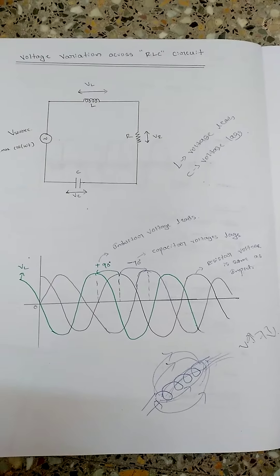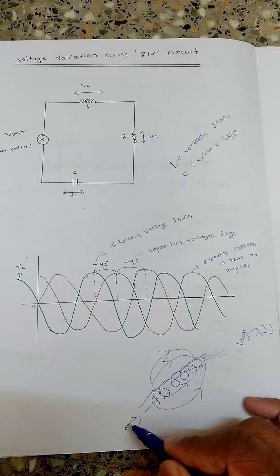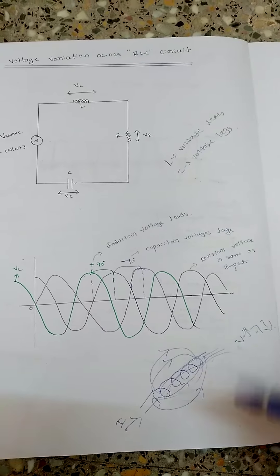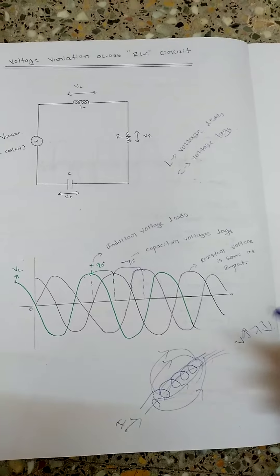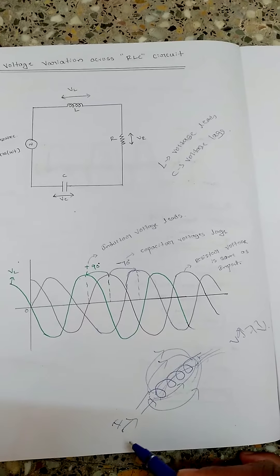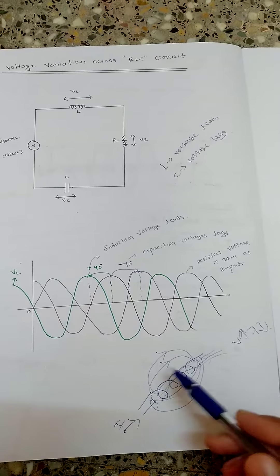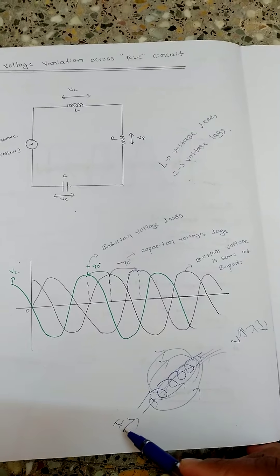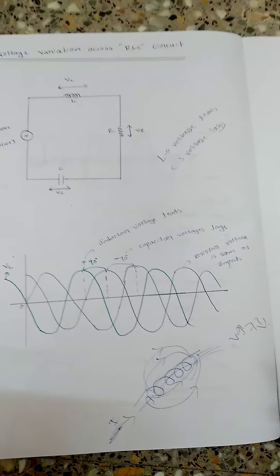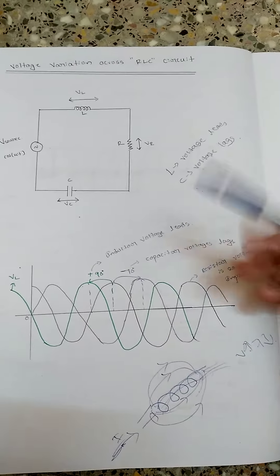The magnetic field is created by the current passing through the coil, but it then opposes that very current — like opposing the creator. The creator of the magnetic field is the current, and once the magnetic field is formed, it opposes the current itself. This is explained by Lenz's law. So now you understand why voltage leads in the case of an inductor.